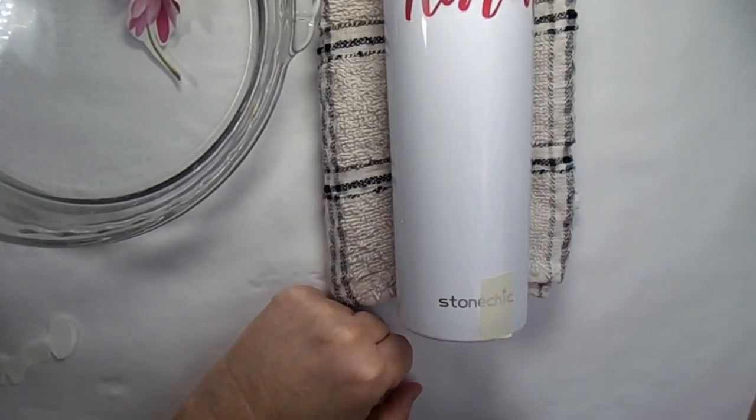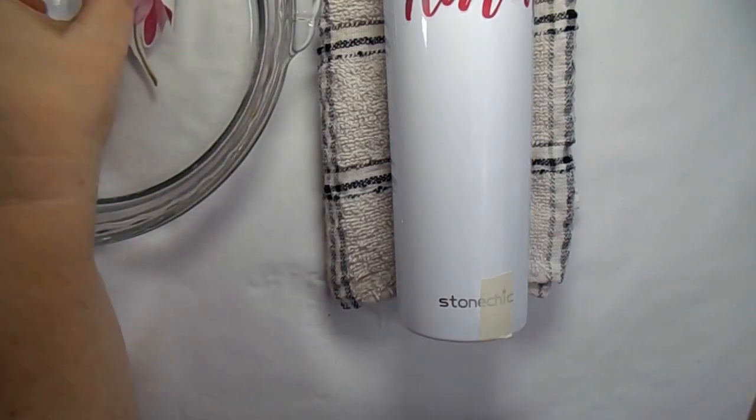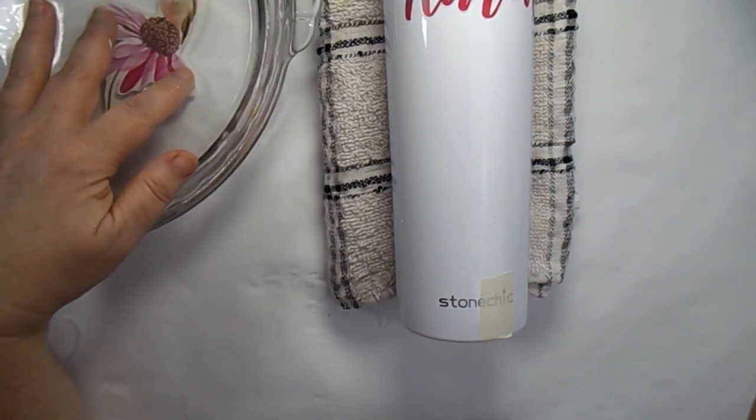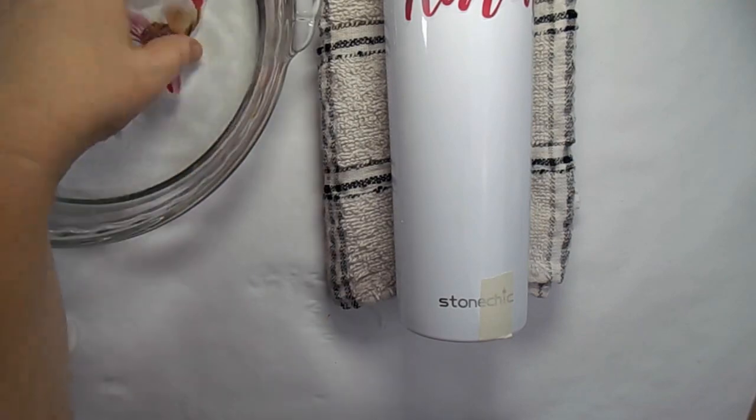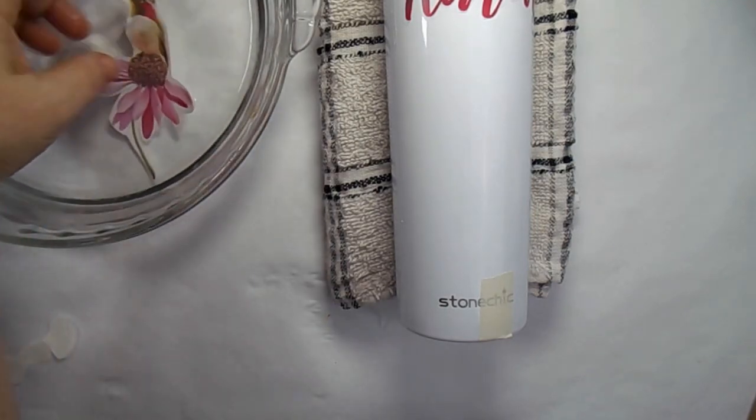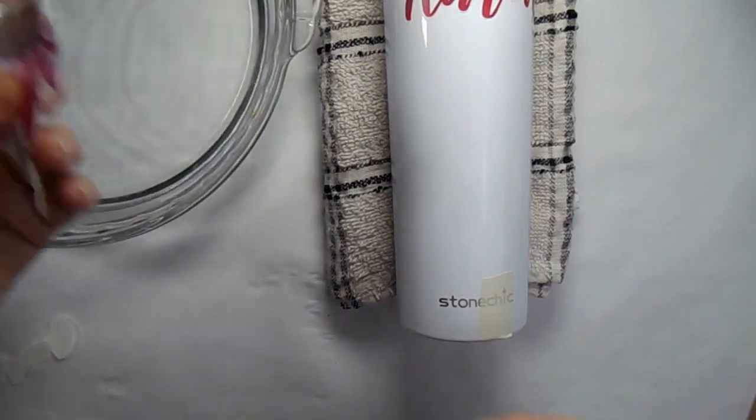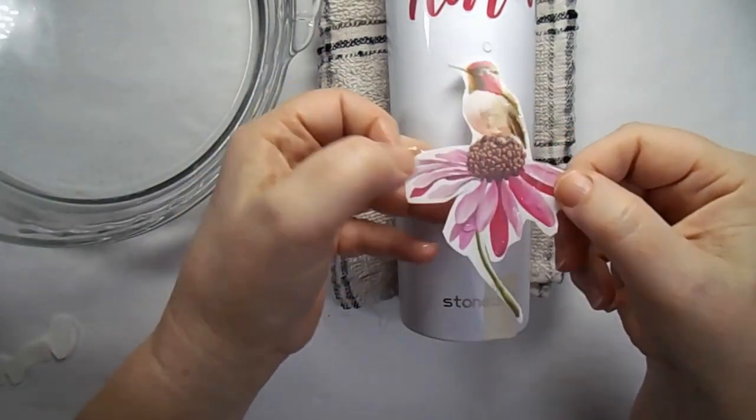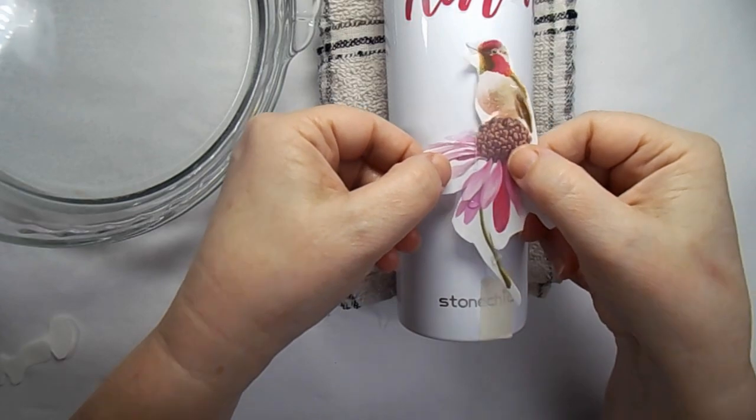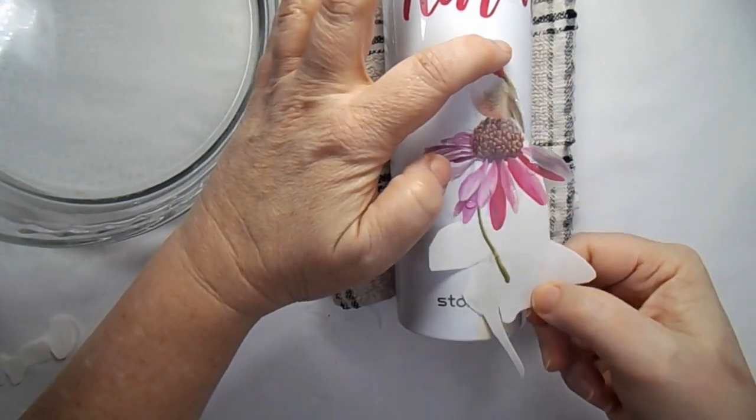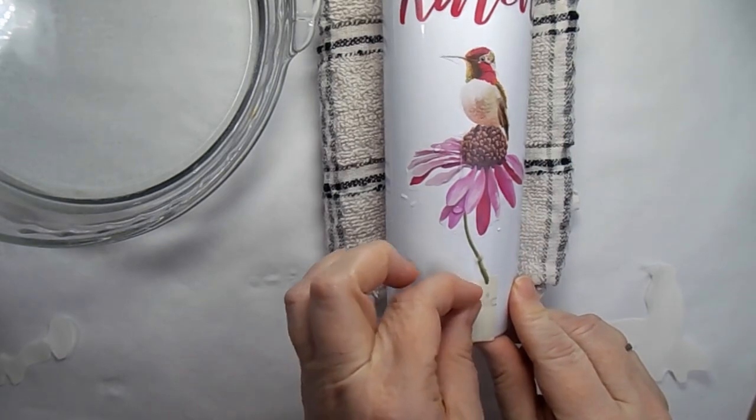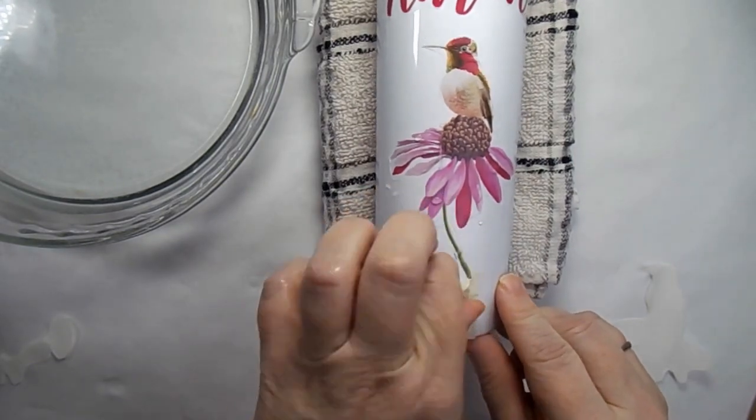My mom's birthday was coming up so I wanted to make her a nice tumbler and I found this hummingbird image. It's from Design Bundles where I got this graphic. I get quite a few of them there. I like to put some of my own stuff together but they have some great graphics that I can use and so can you.